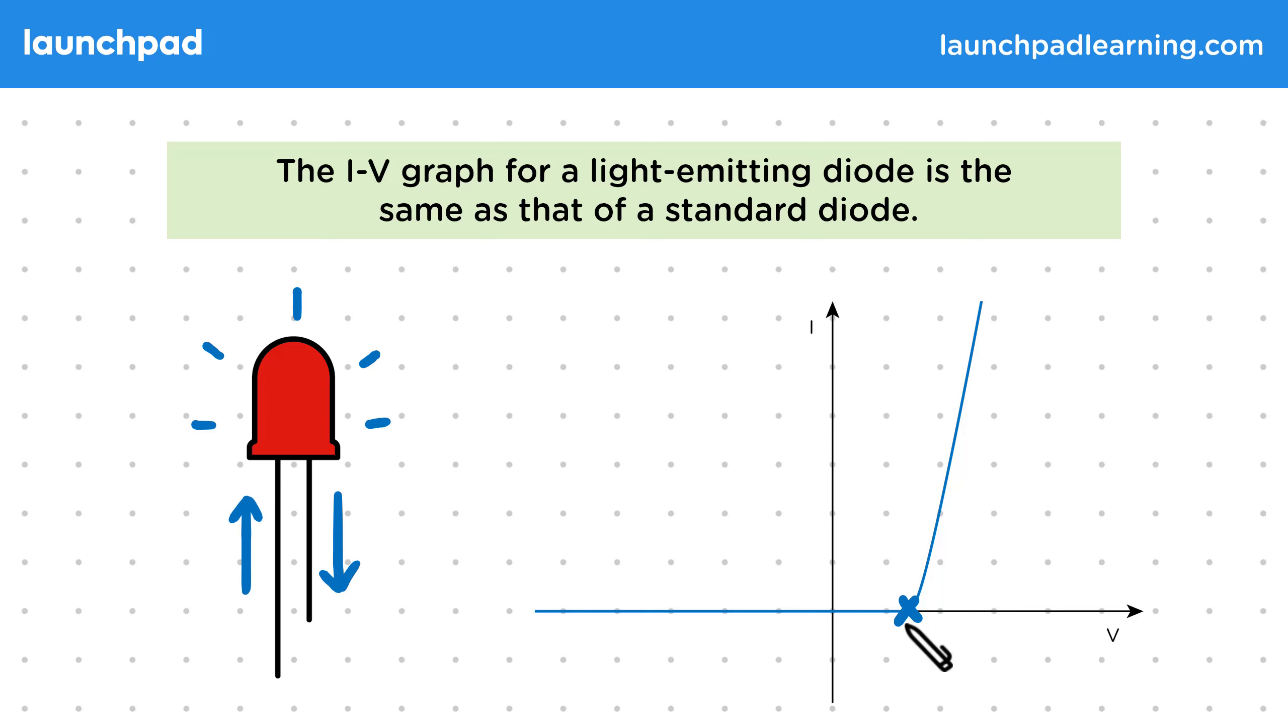To the right, the graph is steep as the LED has low resistance to let a current flow. Then on the left, the graph is horizontal as it has a high resistance to stop the current flowing in the wrong direction.